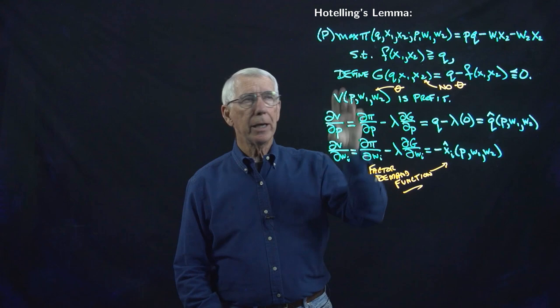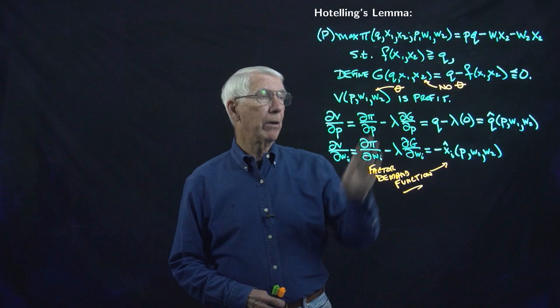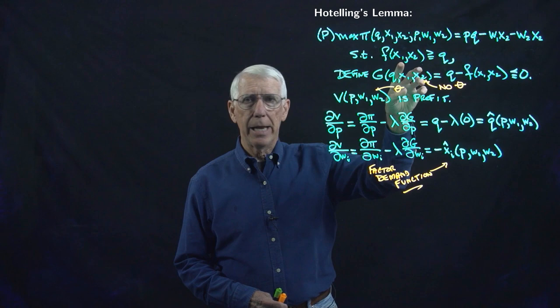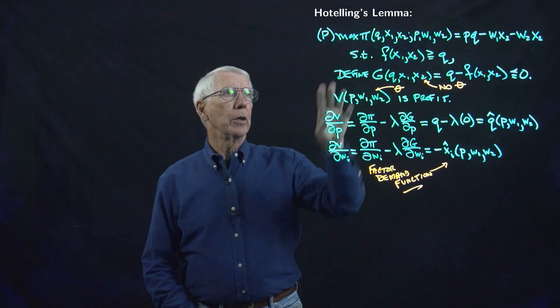So we've looked at a profit-maximizing, price-taking firm and generalized from our initial example to include input decisions, input prices as parameters, and the production function. In our last example, we're going to generalize further to a firm that might have some other objective function — it could be profit or something else.